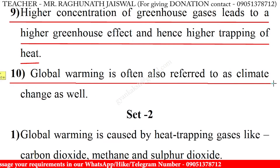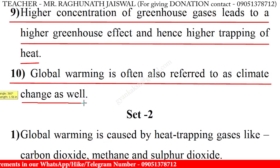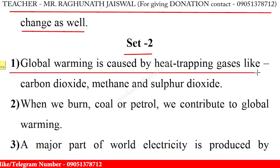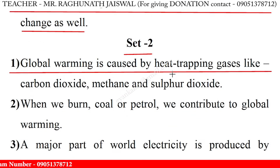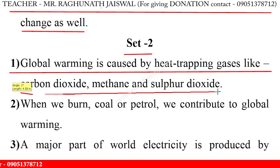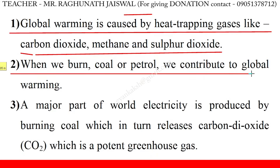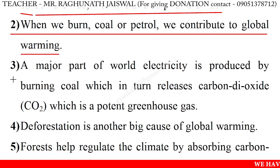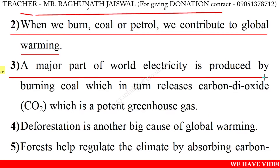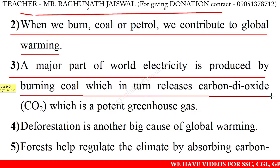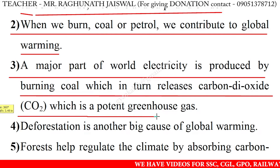Global warming is often also referred to as climate change. Global warming is caused by heat-trapping gases like carbon dioxide, methane and sulfur dioxide. When we burn coal or petrol, we contribute to global warming. A major part of the world's electricity is produced by burning coal, which in turn releases carbon dioxide (CO2), which is a potent greenhouse gas.